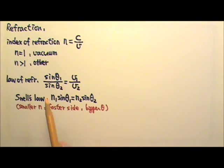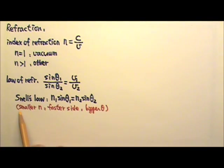And just like with waves, if we have smaller n, that means light is faster in that medium, and on that side we would have a bigger angle.